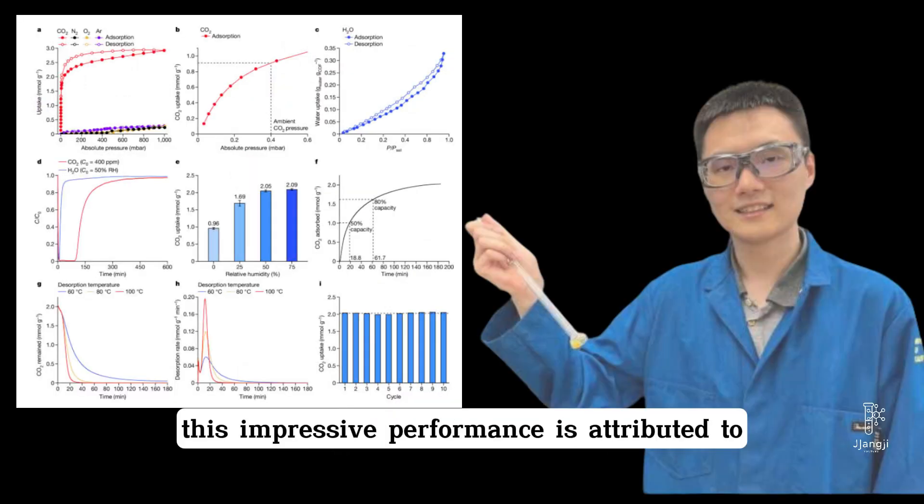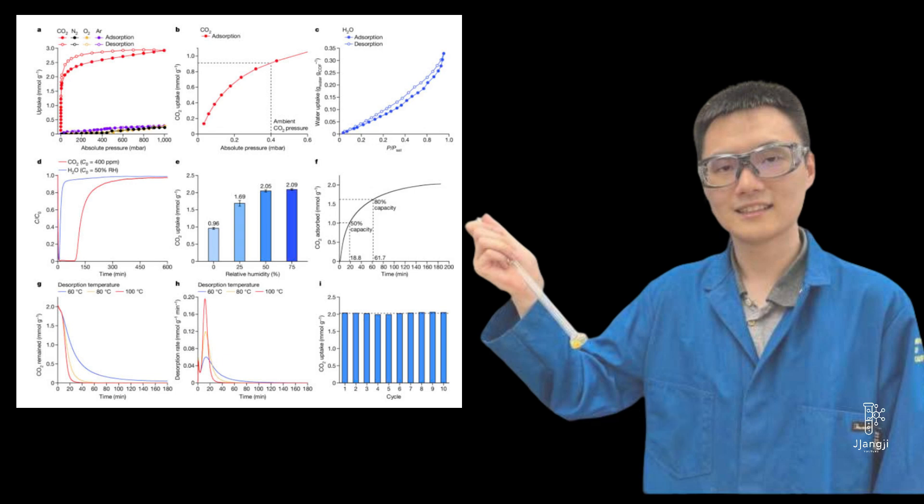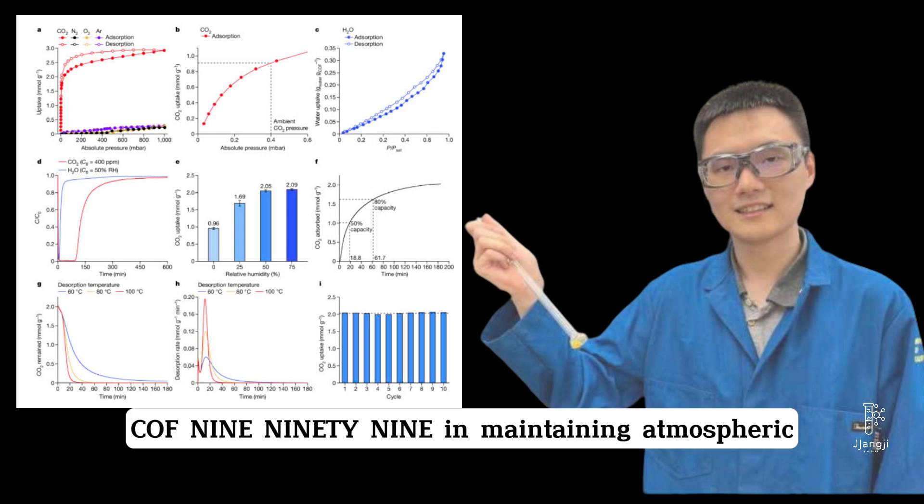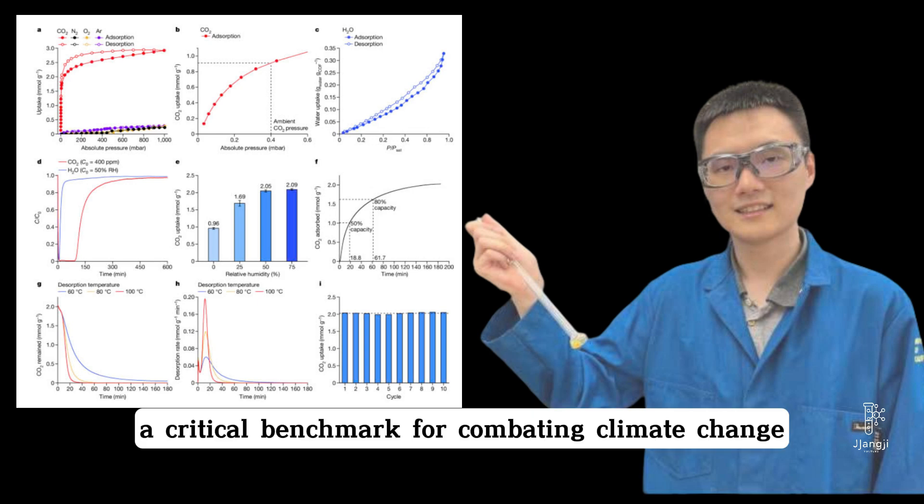This impressive performance is attributed to the material's extensive surface area, its densely packed amine groups, and its well-engineered hexagonal structure. Researchers underscore the importance of COF-999 in maintaining atmospheric CO2 levels below 400 ppm, a critical benchmark for combating climate change.